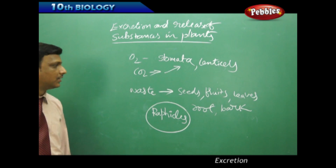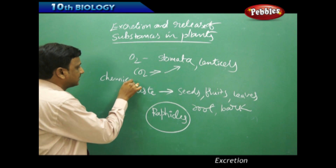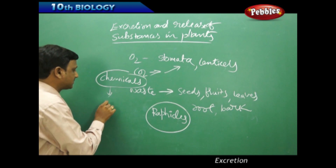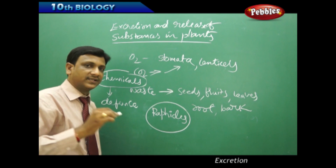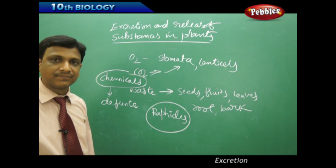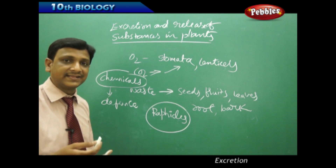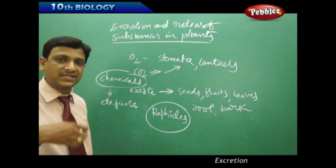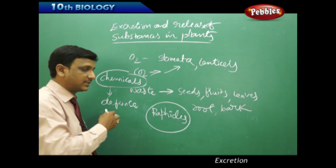Plants convert their excretory materials into some other salts or chemical forms and store them in their body parts. These chemicals are useful for the plant in defense — sometimes defense against animals. These chemicals are stored in the seeds and fruits of certain plants, making them bitter. If an animal eats these seeds or fruits, the animal may die, so animals lose interest in eating them. In this way the plant can protect its seeds so they germinate into new plants.